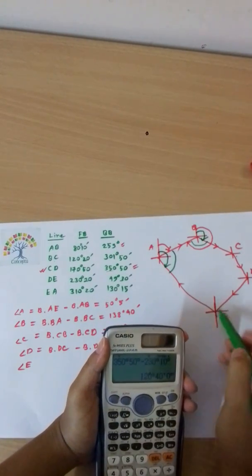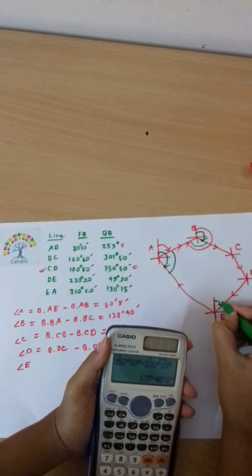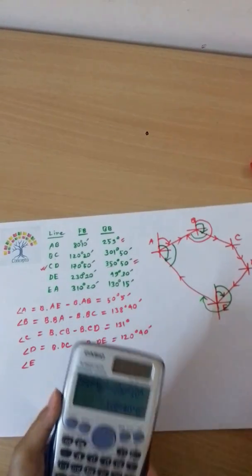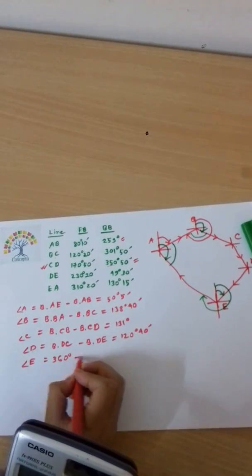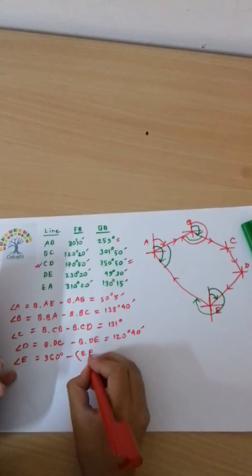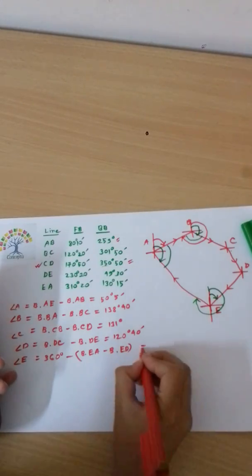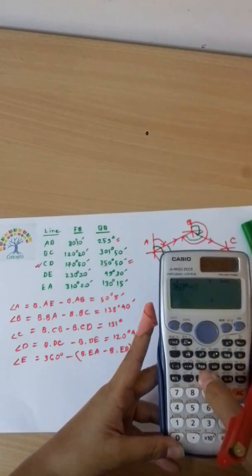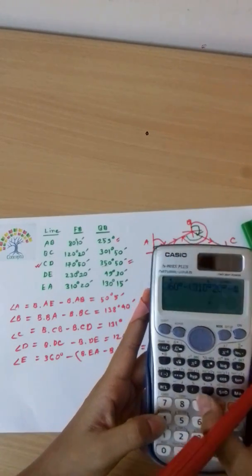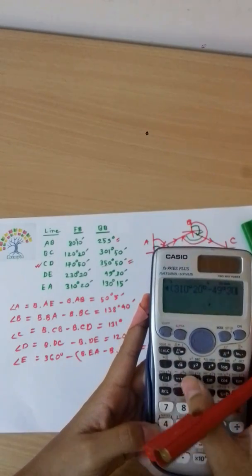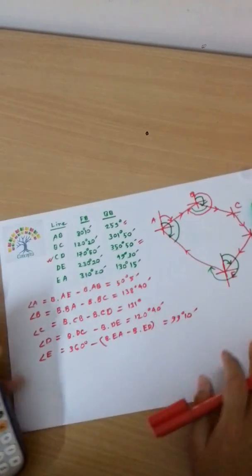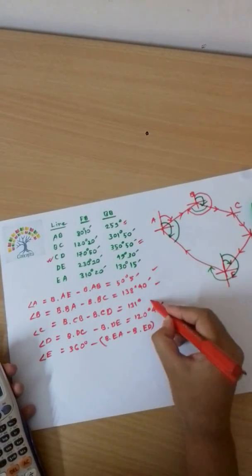For angle E, we need clockwise measurement: bearing of ED minus bearing of EA. Since bearing of EA is larger, we calculate 360 degrees minus bearing of EA minus bearing of ED, which gives us 99 degrees 10 minutes.